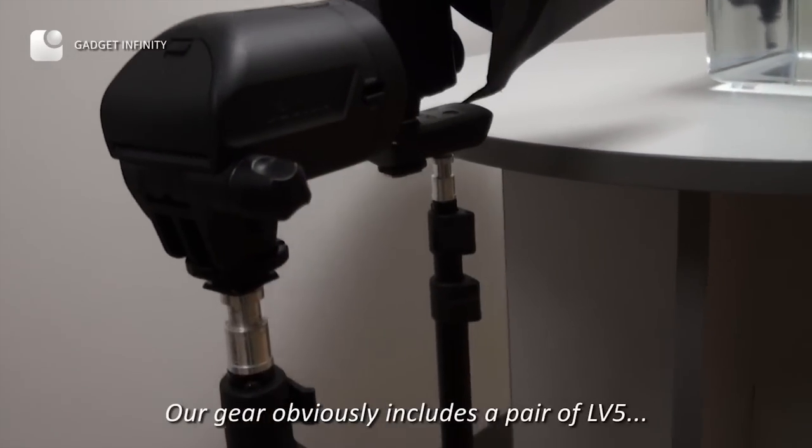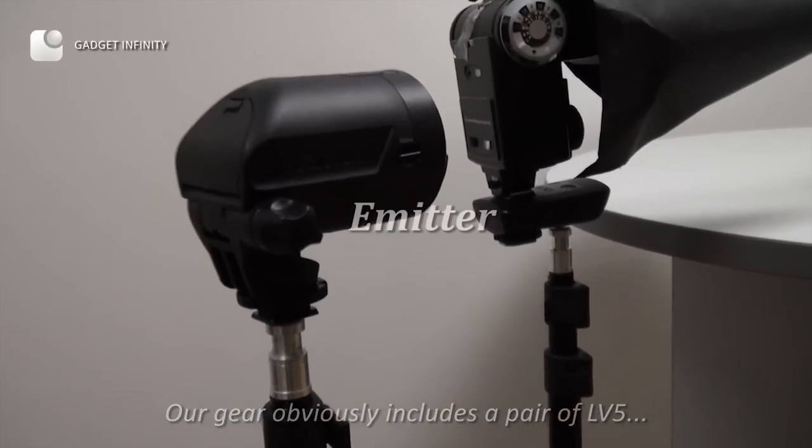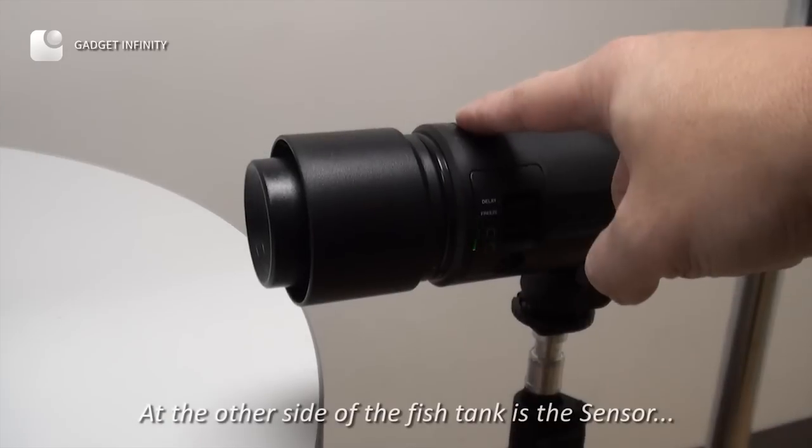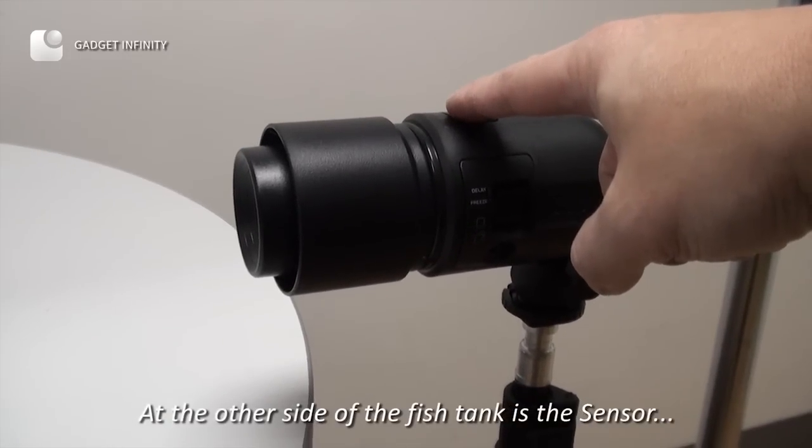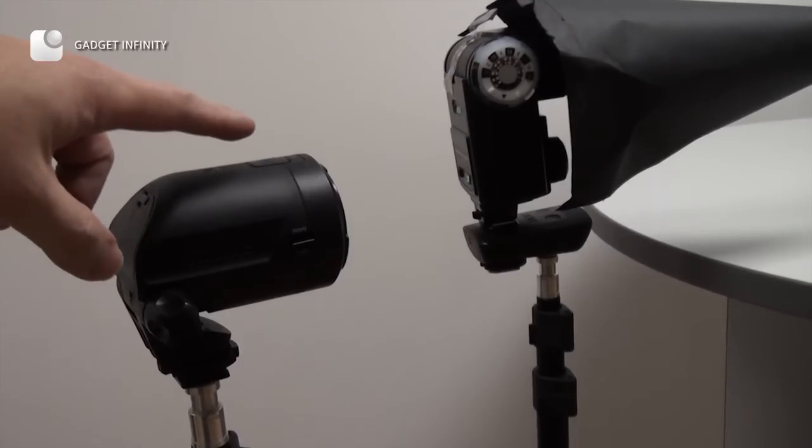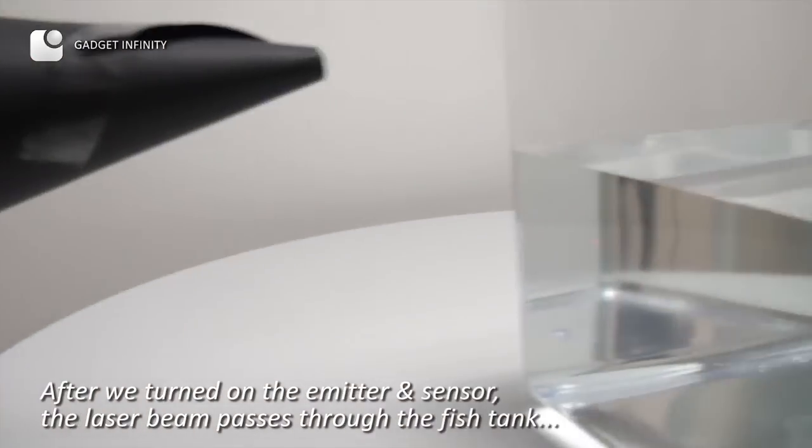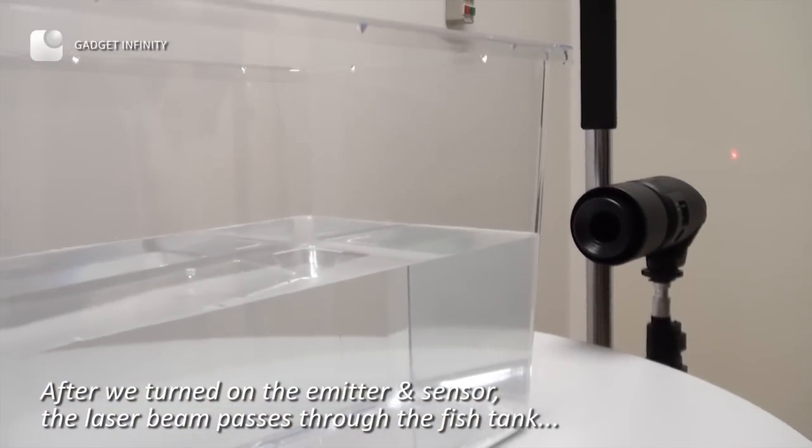Our gear obviously includes a pair of LV-5. At the other side of the fish tank is the sensor. After we turn on the emitter and sensor, the laser beam passes through the fish tank.